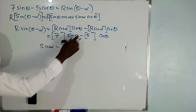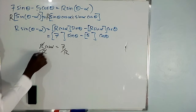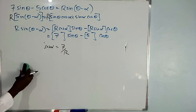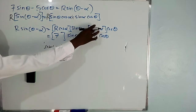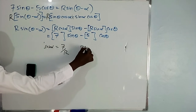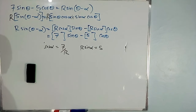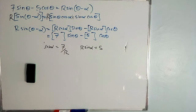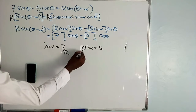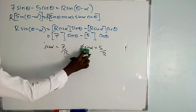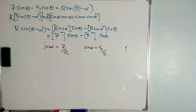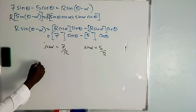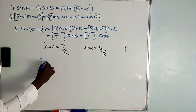Making cos alpha the subject: divide both sides by R, so cos alpha = 7/R. Then comparing coefficients of cos theta: R sin alpha = 5, so dividing both sides by R gives sin alpha = 5/R. From these two equations we can now find the value of alpha using the tan ratio, because tan will give us the ratio of sin alpha over cos alpha, eliminating R.